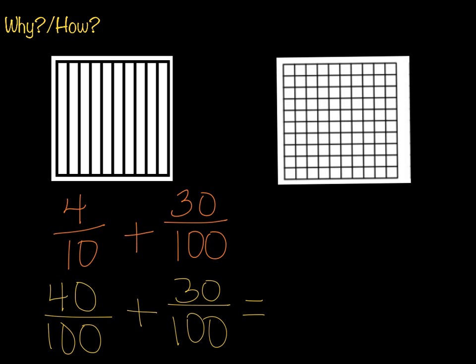And again, we're going to add our numerators, forty plus thirty, which gives me seventy. And we bring our denominator over. So now my answer to that problem would be seventy one-hundredths.